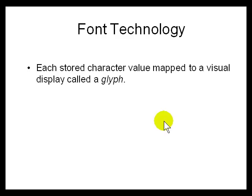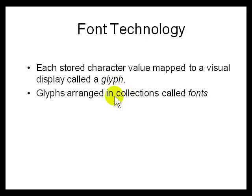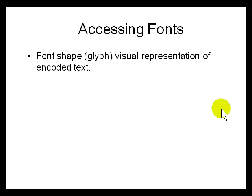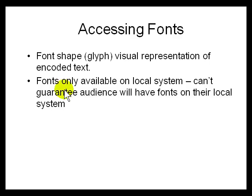Each stored character value mapped to a visual display is called a glyph, and a collection of glyphs is called a font. Many fonts are really old — like 15th century, about 500 years ago. Fonts are available on your system, whether Windows, Mac, or Linux. If you write a document and need to include fonts, people need to have copyright to the font or they need to have bought it, because fonts are expensive to make. The font must be installed on your system before you can use it.